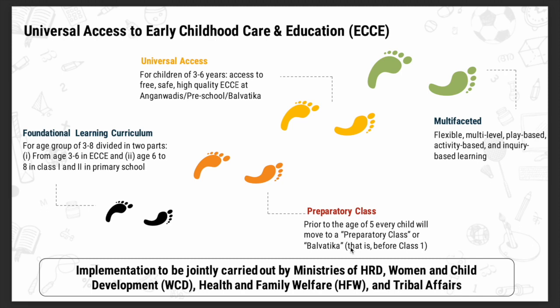Now coming to ECCE — Early Childhood Care and Education. For years, when we talked of education, we always only talked about school education starting from class one — the old 10+2 system — and nobody cared about what happened before that. NEP has changed that, with a lot of focus on ECCE. Universal access has to be there for children aged three to six. There will be a framework, FLN must be achieved, and a preparatory class called Balvatika will be there before anyone enters class one.